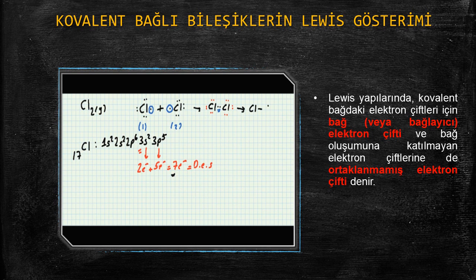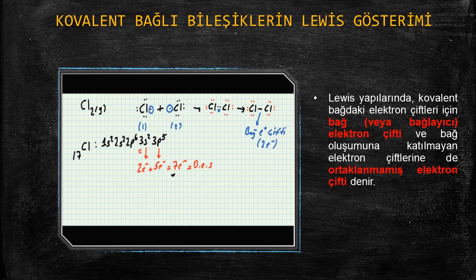Şuradaki 2 elektronu tek çizgi halinde gösterebilirim, daha önceki videolarda anlatıldığı üzere. 2 tane klor atomunu yerleştirdim. Şu kırmızı noktaları tekrar yazıyorum. Her elektron bir nokta ile gösteriliyor. Şu siyah çizgi, 2 klor atomu arasında bulunan elektron çifti, bağ elektron çifti olarak adlandırılır. Burada 2 elektron bulunmaktadır.